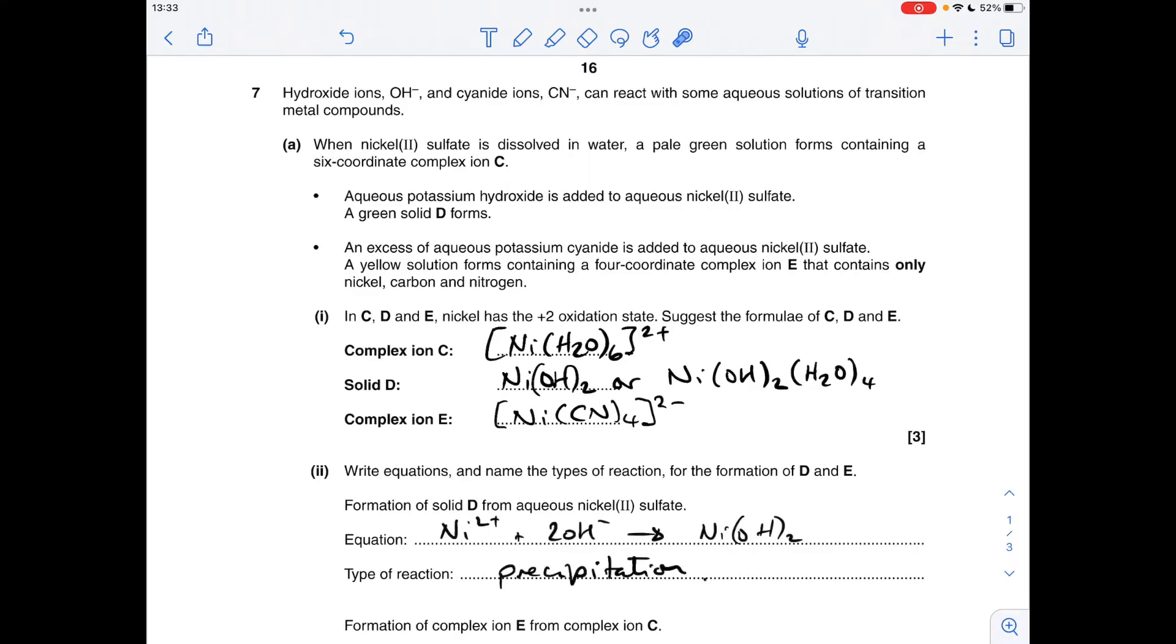Moving on to the equations now in part two. I'll deal with the type of reaction first and then give you both versions of the equation. We've got a precipitate D, so this is a precipitation reaction. Remember we said it was nickel(II) hydroxide, so you can either give this simplified version of the equation, that's absolutely fine.